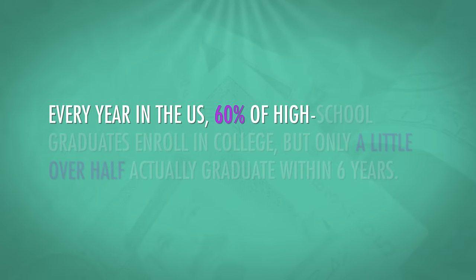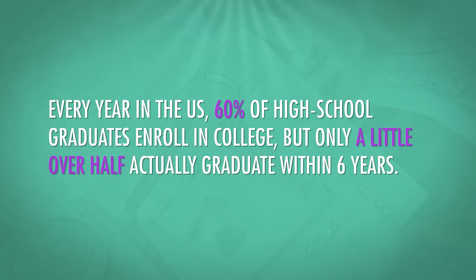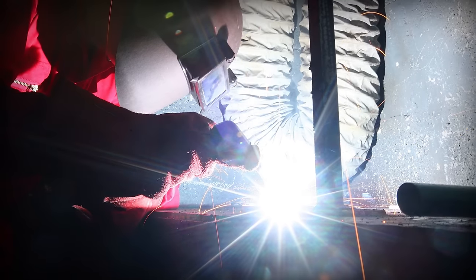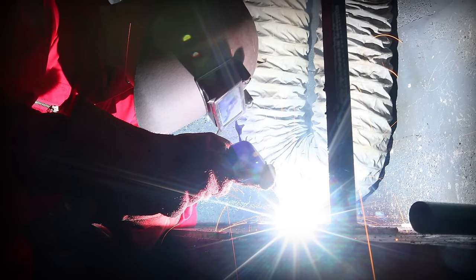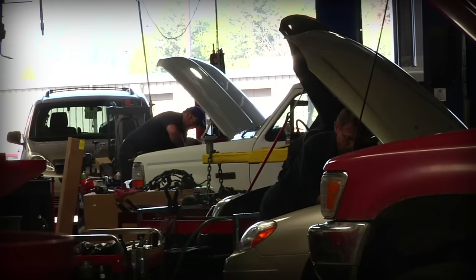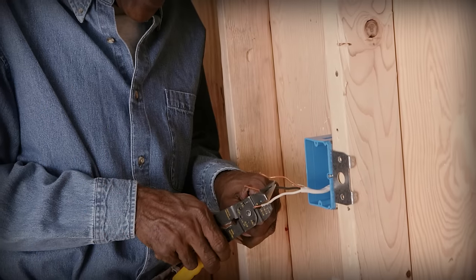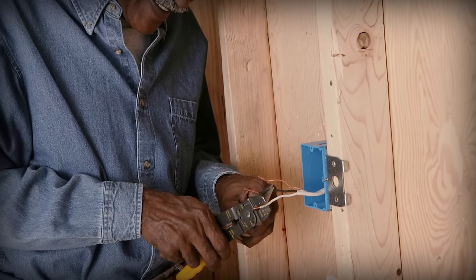Every year in the US, 60% of high school graduates enroll in college, but only a little over half actually graduate within six years — only half. But what about students who don't have the means or inclination to go to a four-year university? Better money can be found in careers requiring specific training and skills, learned through a community college or apprenticeship. The average car mechanic earns $40,000 a year, the average plumber earns $50,000, and the average electrician $55,000. As more young people opt for college and older workers in these careers retire, most economists expect these wages to rise.